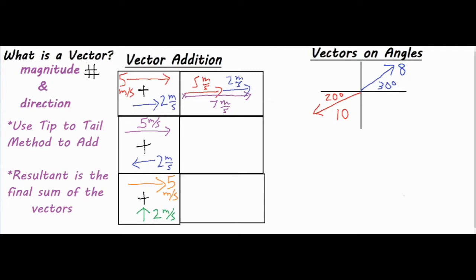For the next example, we have a five meters per second vector going to the right, then we start the second vector where the first one ends, but this time it goes back the other way. The resultant vector goes from beginning to end, which is basically five minus two, giving us three meters per second.